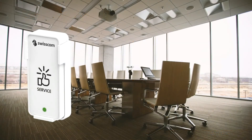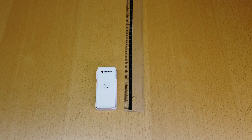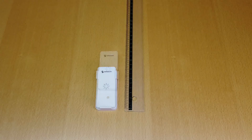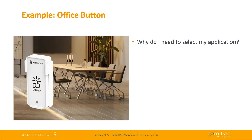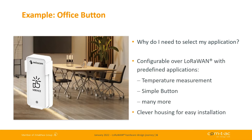Another application example is an office button. What's important here is the installation itself — it should be very small, which means the device has a really small battery inside. You need to think carefully about how to use the energy of that battery and how to get the most out of it for your application. We have three different profiles defined in the button and you can select over LoRaWAN downlink which profile fits your office button use case.